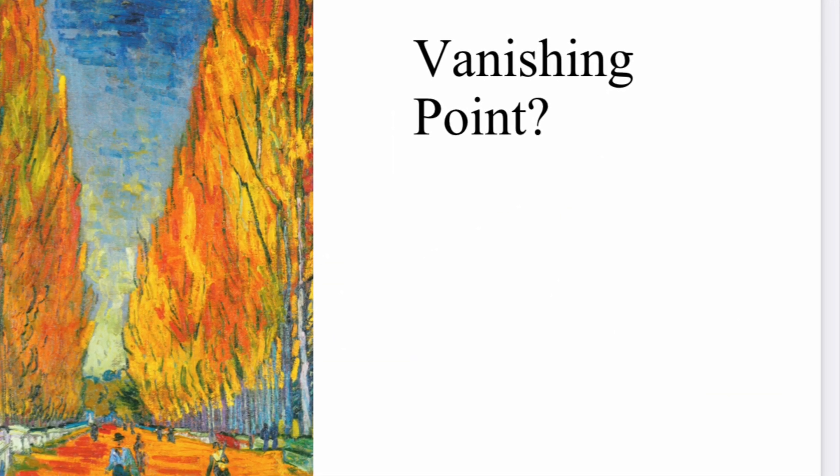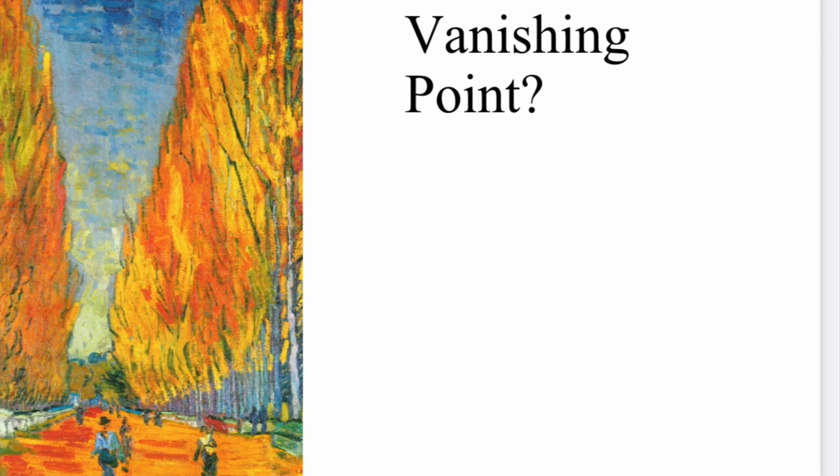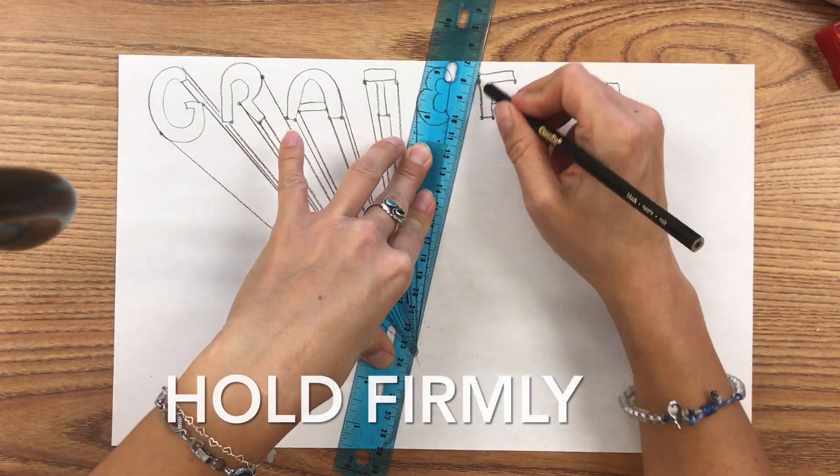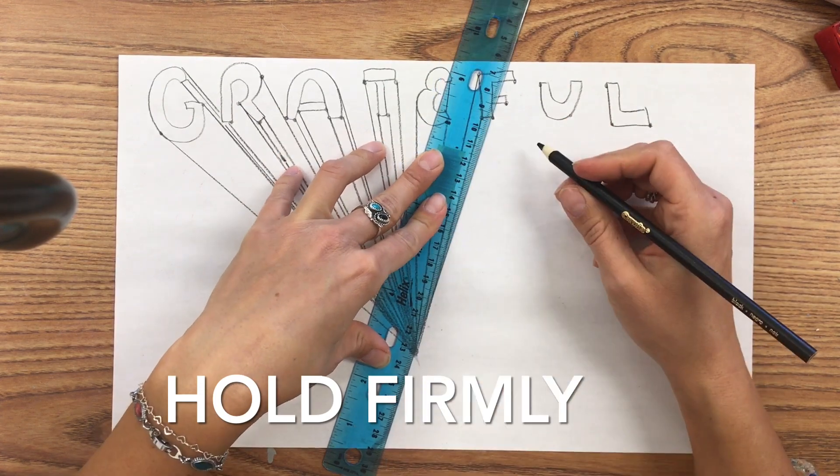Can you see the vanishing point in this painting by Vincent Van Gogh? Today we're going to continue our exercise of using perspective and creating the illusion of three-dimensional words.